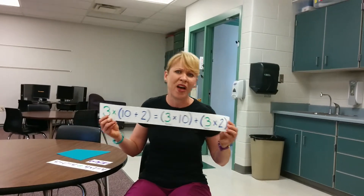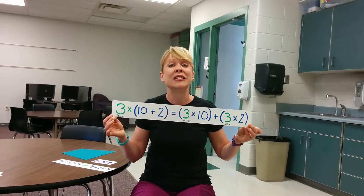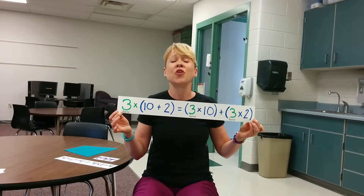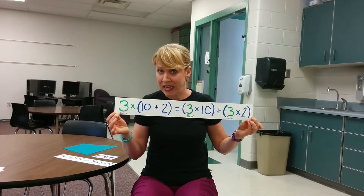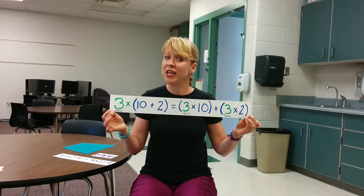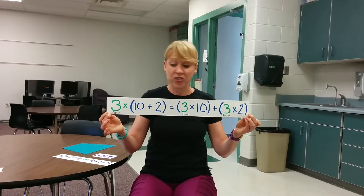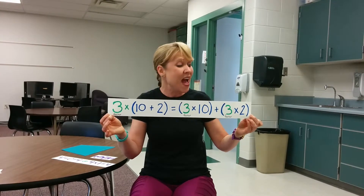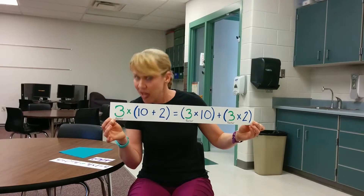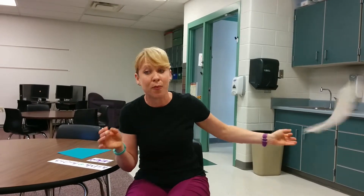Here's a tough one — this is the distributive property example. Distributive, distributing, sharing the factors. If you'll notice, 3 is the factor, and I am sharing it with both the 10 and the 2, because everybody wants a little bit of this 3 right there. Distributive property.